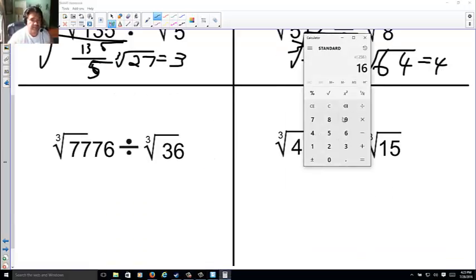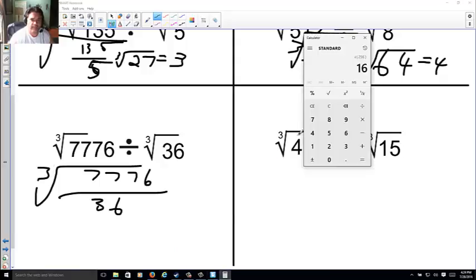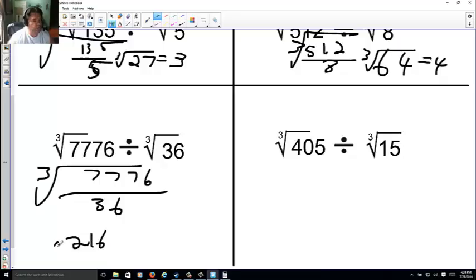Here, oh, I'm going to need my calculator for this. So, 7,776 divided by 36. And all that's in a big cube root. Well, 7,776 divided by 36 equals 216. And that's still a cube root, remember. What times what times what makes 216? I know it's 6.